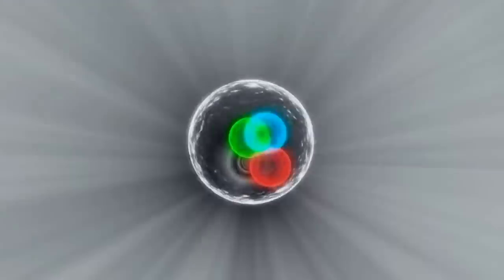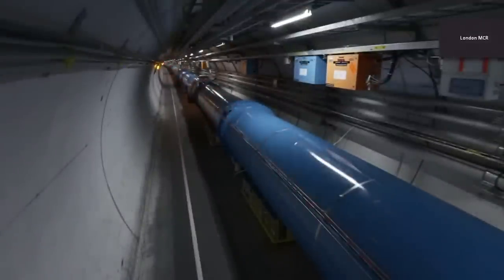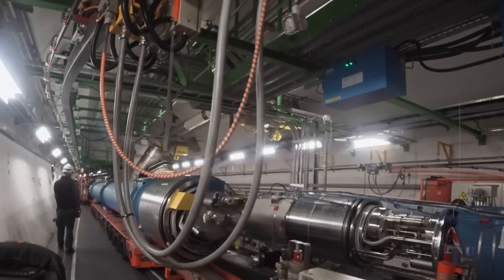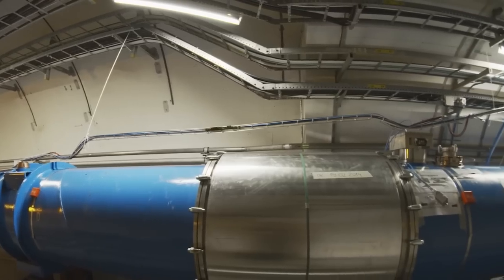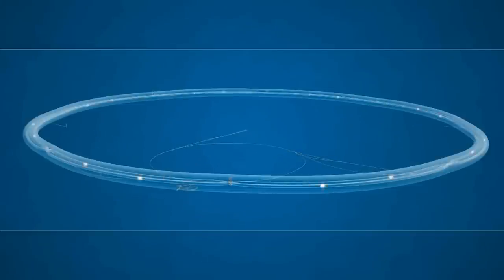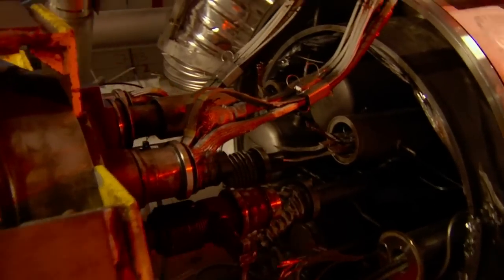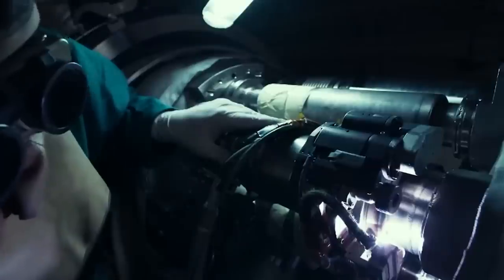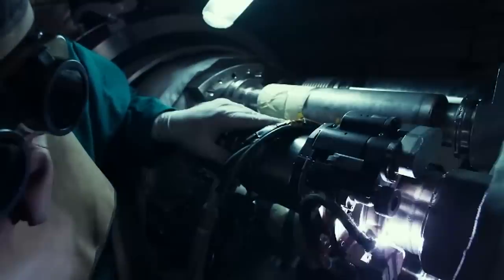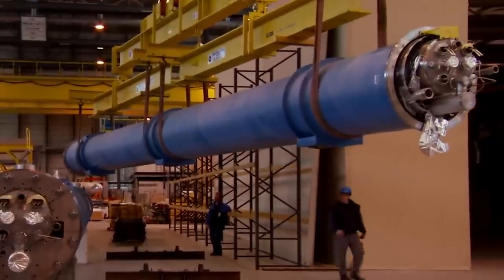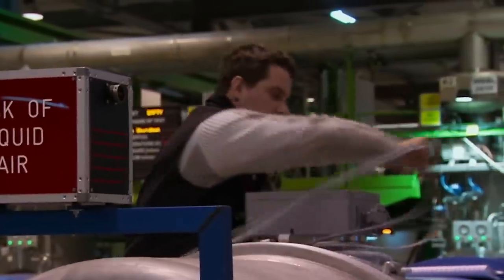Two high-energy particle beams move at near the speed of light inside the accelerator before colliding. The beams flow in opposite directions in separate beam pipes, which are two ultra-high vacuum tubes. A strong magnetic field maintained by superconducting electromagnets guides them around the accelerator ring. This necessitates cooling the magnets to minus 271.3 degrees Celsius, which is colder than outer space.